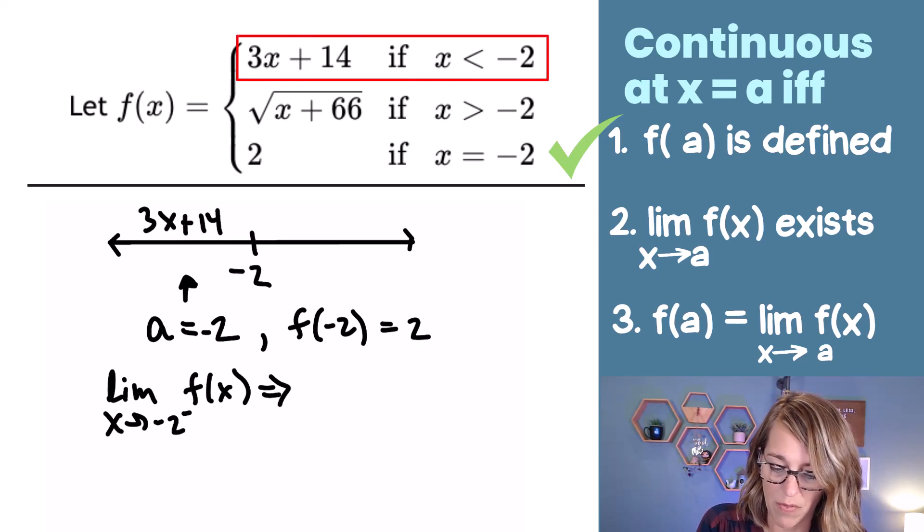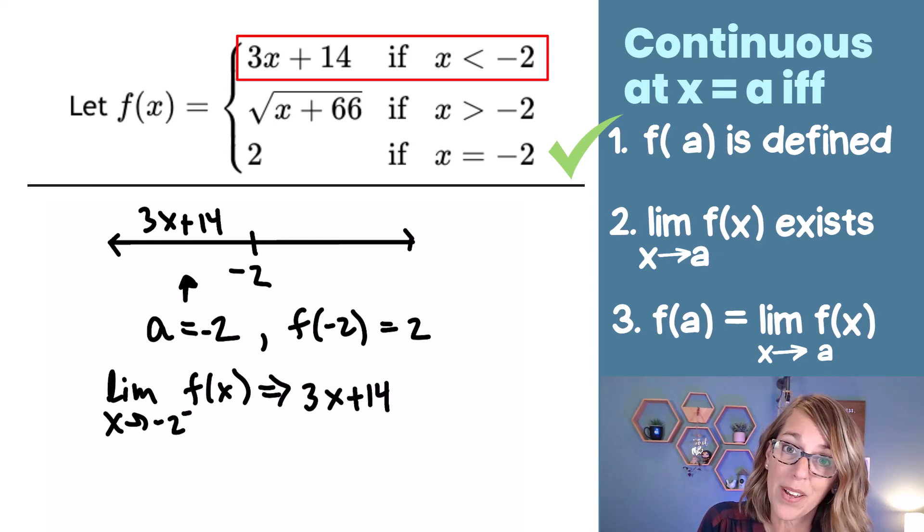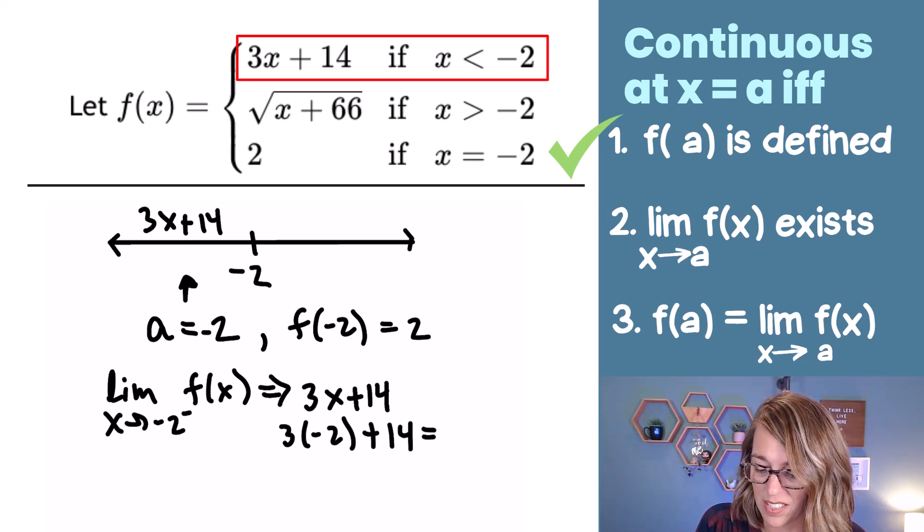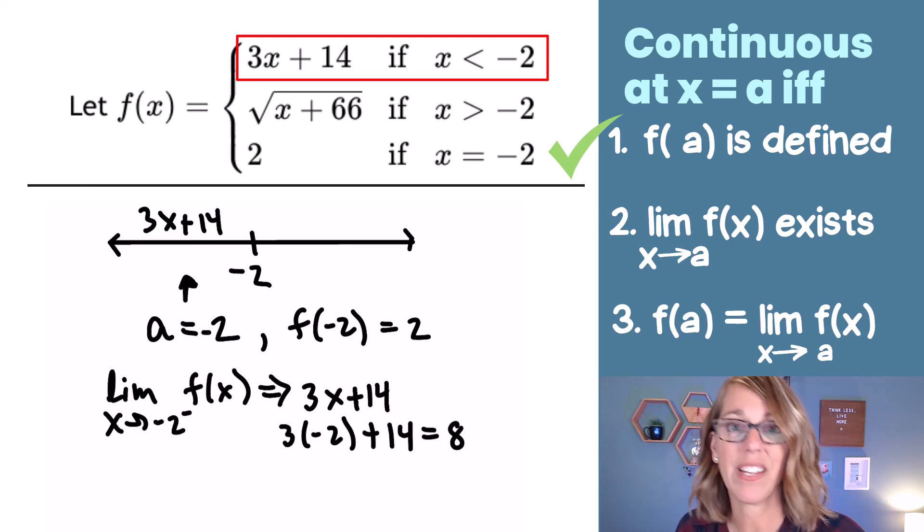So let's go ahead and use that formula, 3x plus 14. I'm going to plug my negative 2 in, 3 times negative 2 plus 14, that's negative 6 plus 14, which is going to be an 8.